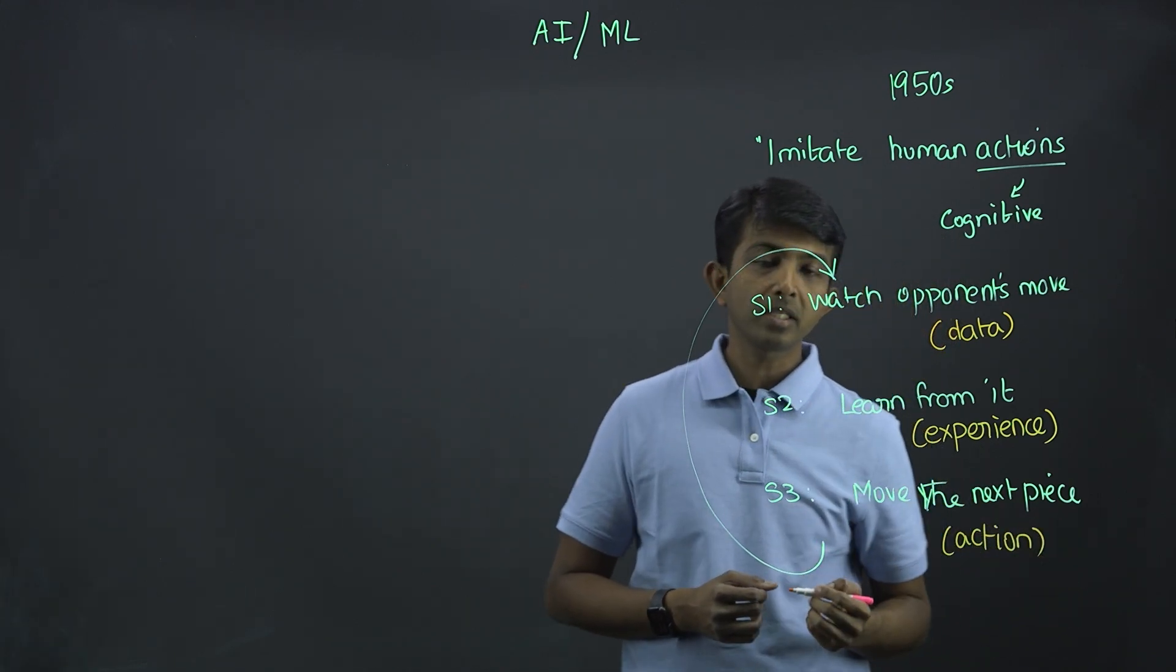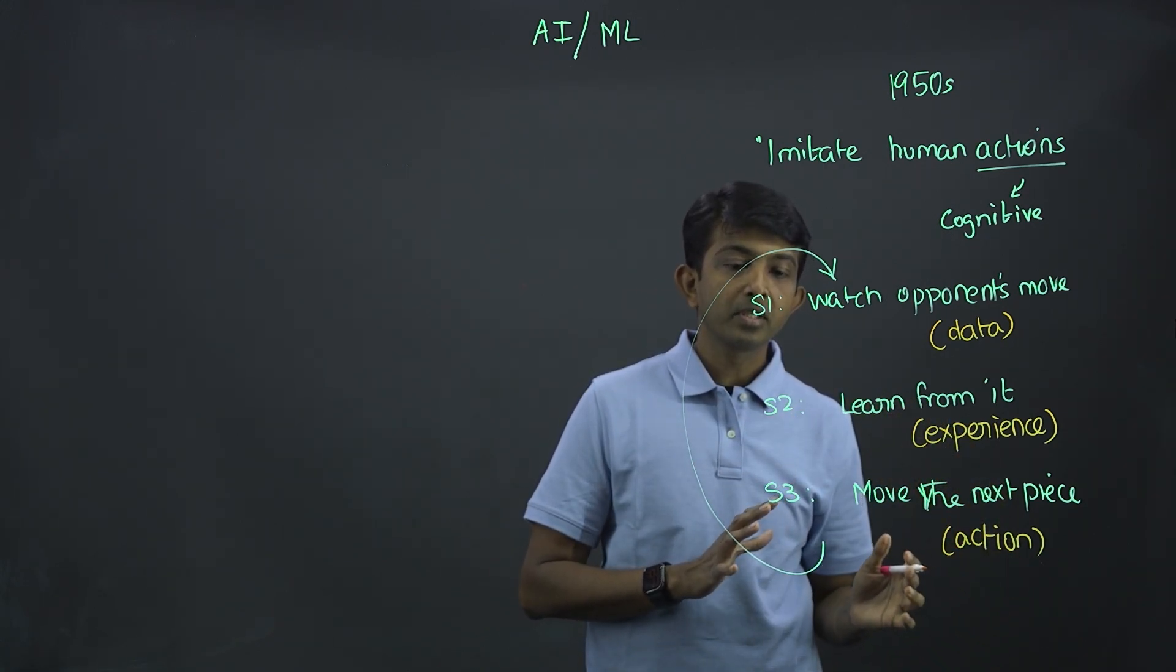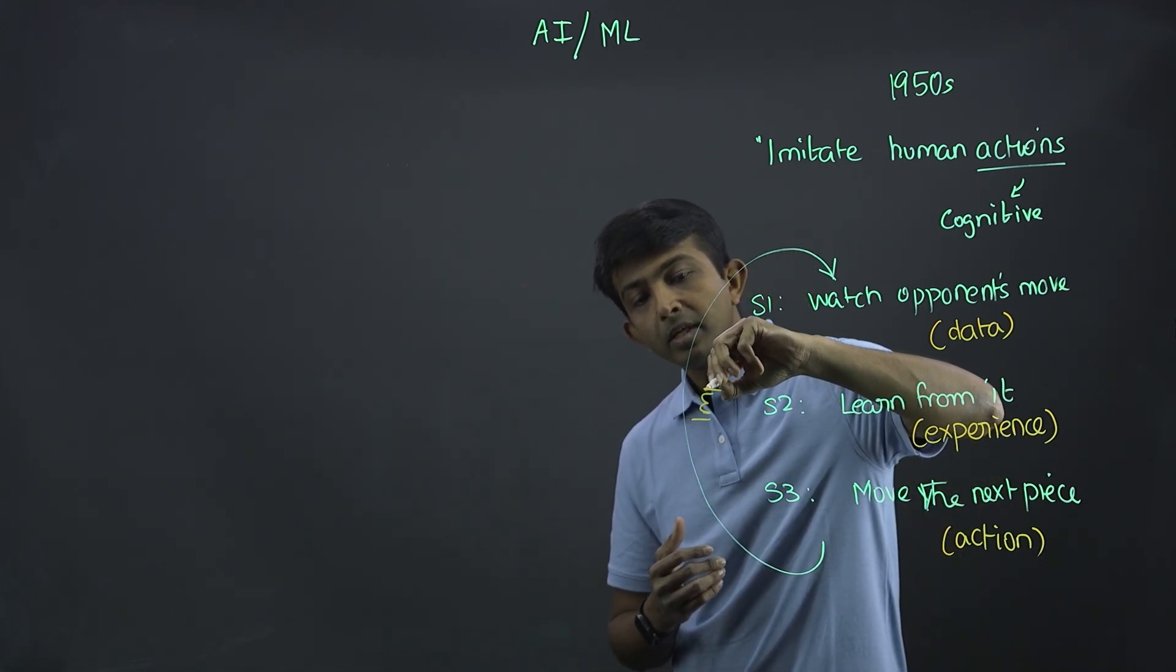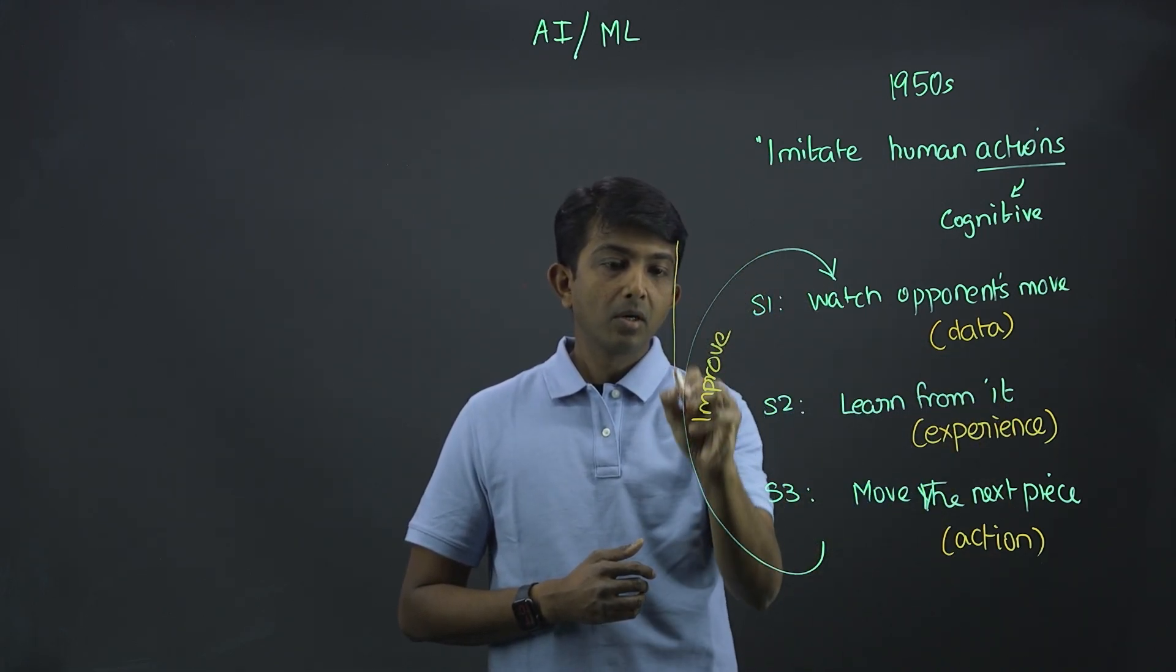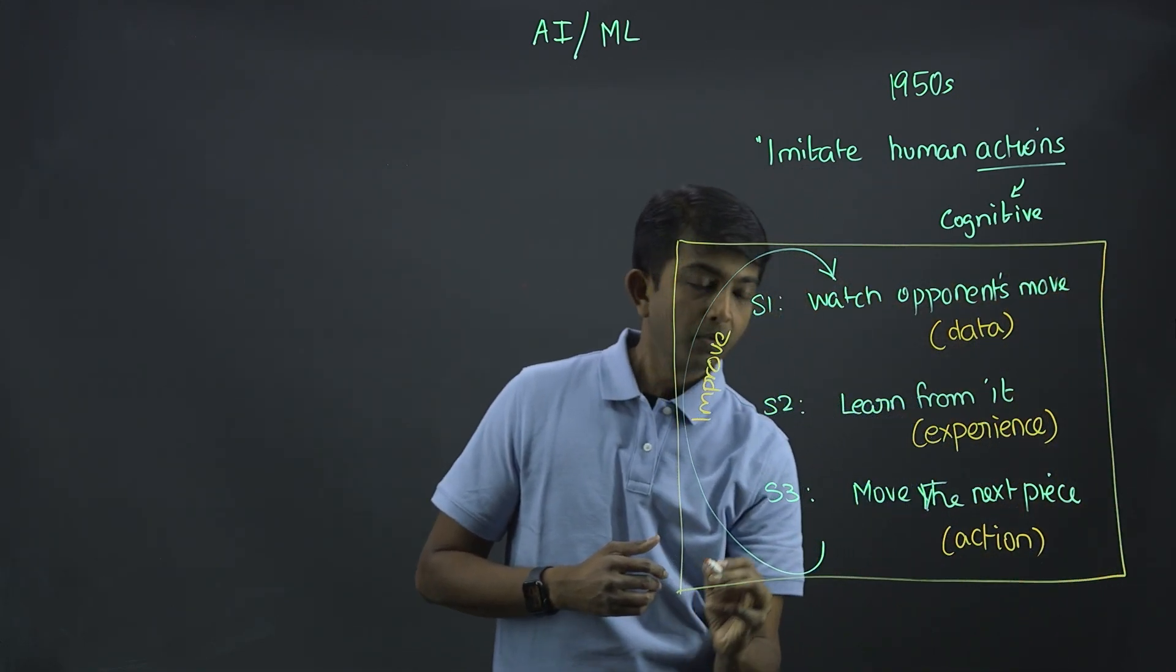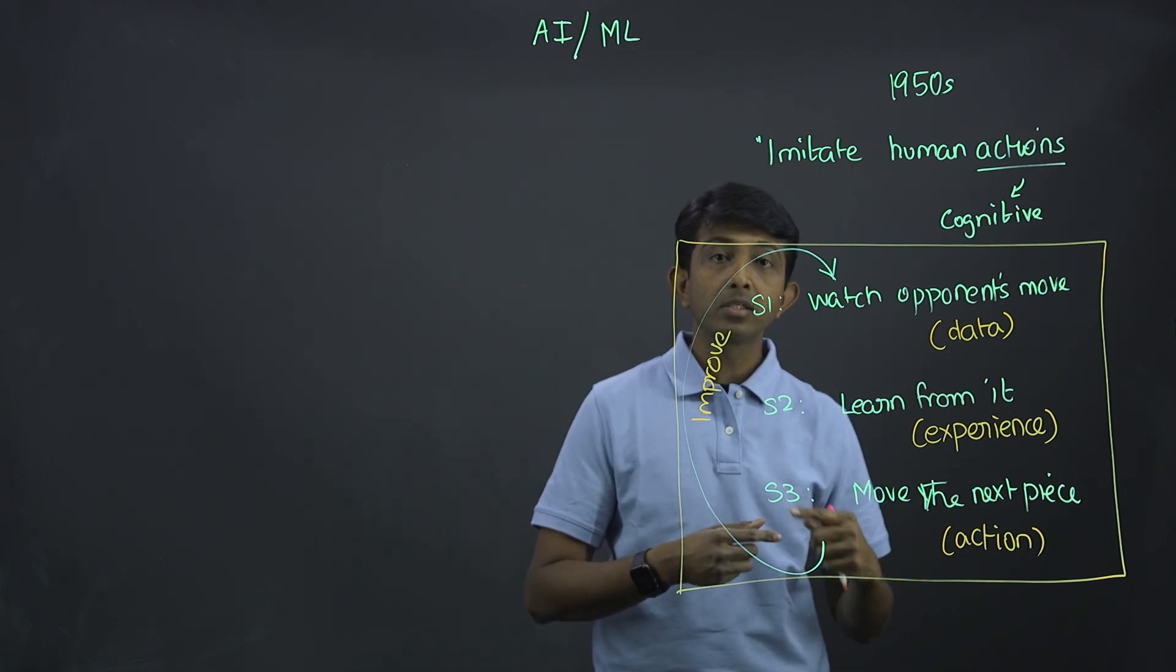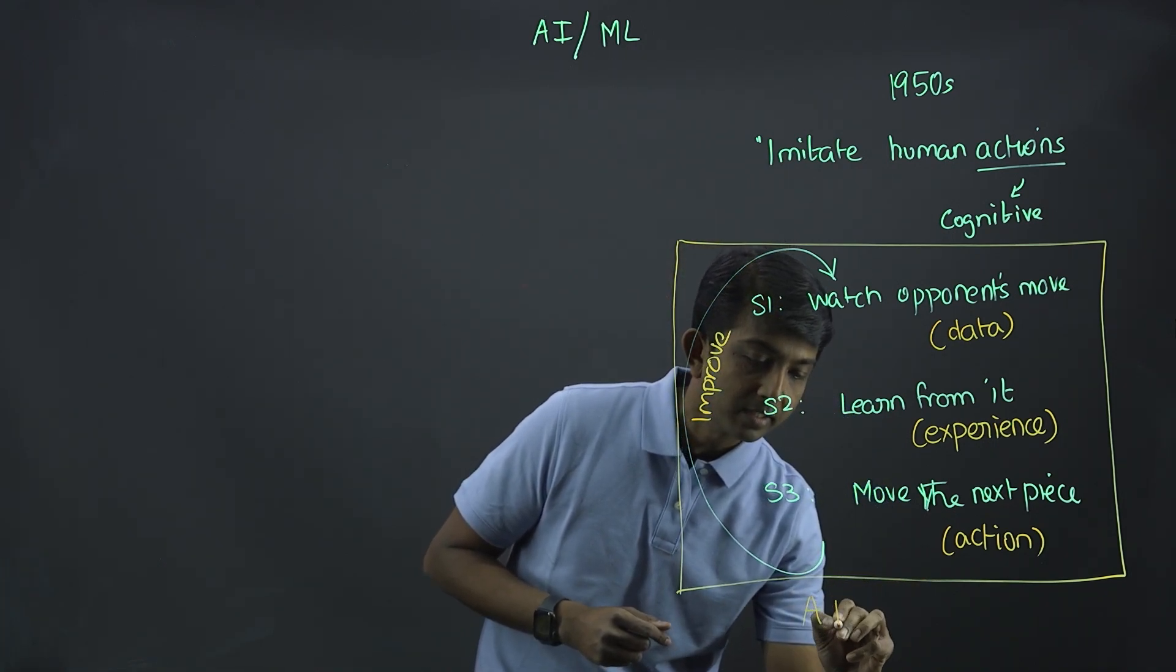And note that even though at step two, you understand what are the possible next moves, it is going to change because the opponent is going to change its move. So you need to continuously improve upon it. Now, this whole system where you're learning from, you're watching the data, learning from the experience, accomplishing the action, and continuing to improve upon, it's called the AI system.